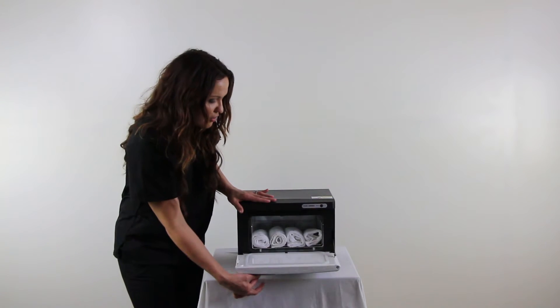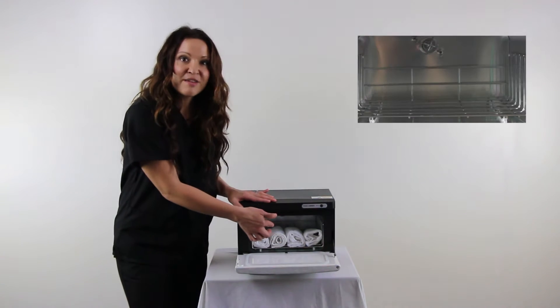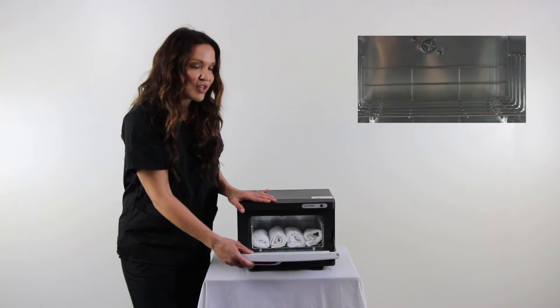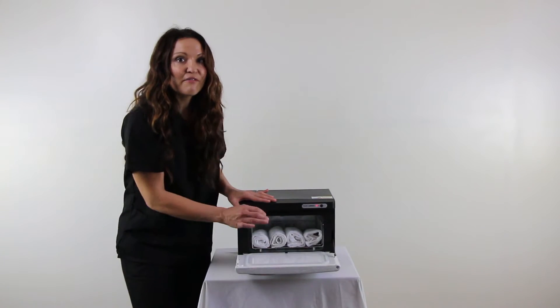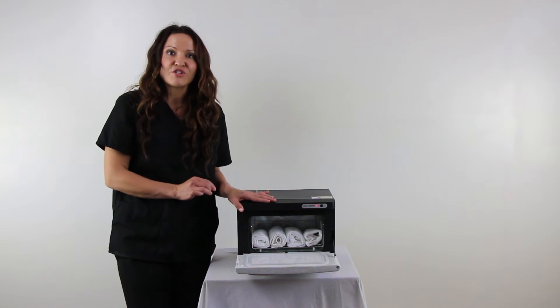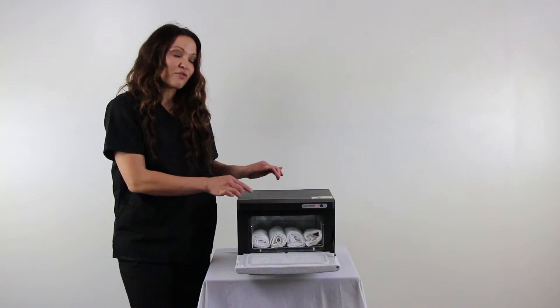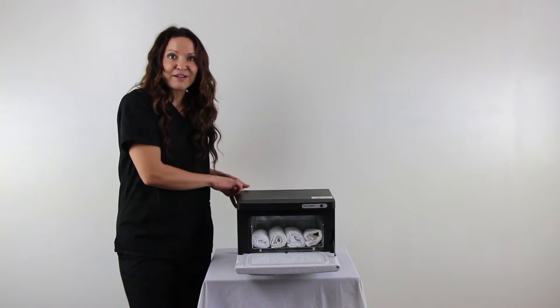Now when I open the door, the UV light that's located here will automatically turn off. It's only on when the door is closed. UV light is great for sanitation purposes and the prevention of mold. The on-off switch for the UV light is located in the back of the unit.